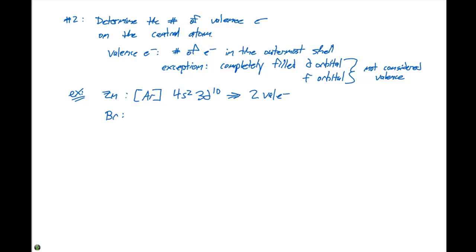Another example we can look at is bromine. It's also going to have the argon noble gas core and its electron configuration is 4s2, 3d10, 4p5. And it has seven valence electrons.